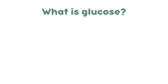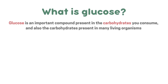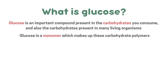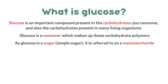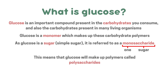So first, what is glucose? Glucose is an important compound present in the carbohydrates you consume and also the carbohydrates present in many living organisms. Glucose is a monomer which makes up these carbohydrate polymers. As glucose is a sugar, also known as a simple sugar, it's referred to as a monosaccharide. Mono means one and saccharide refers to sugars, so it's a monosaccharide because it's a simple sugar. This means that glucose will make up polymers called polysaccharides, which means many sugars.